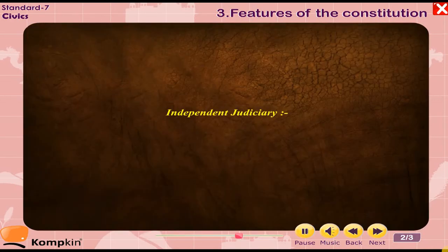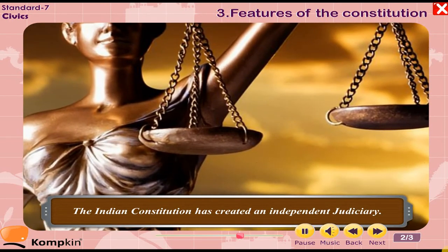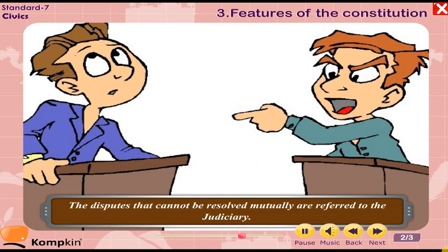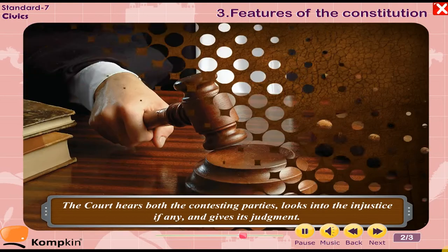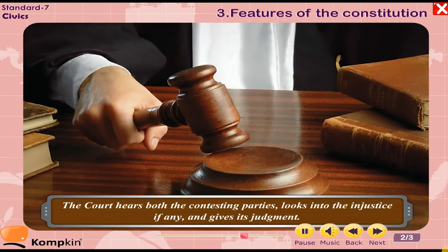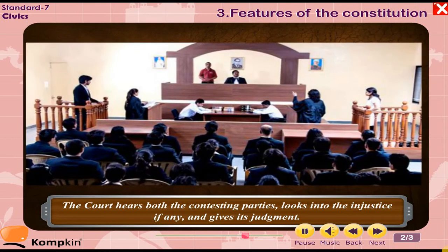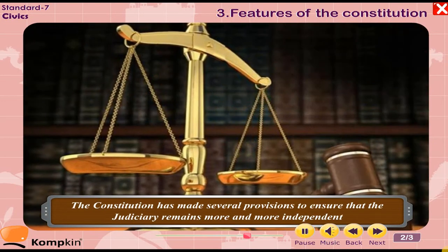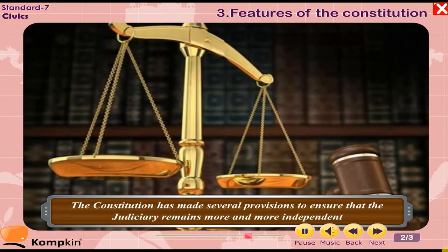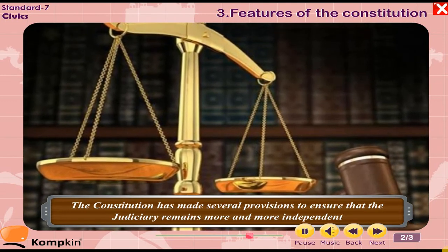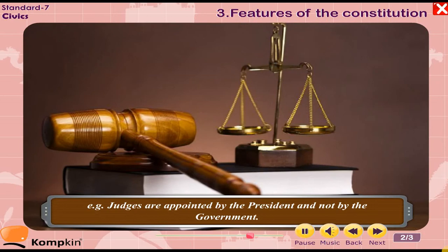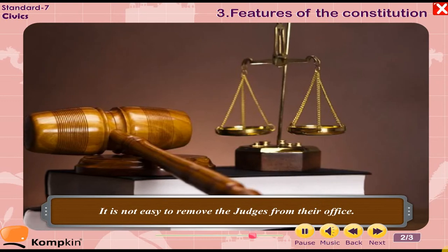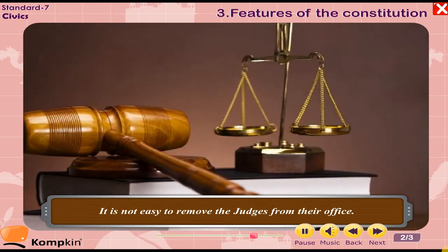Independent judiciary: The Indian constitution has created an independent judiciary. Disputes that cannot be resolved mutually are referred to the judiciary. The court hears both the contesting parties, looks into the injustice if any, and gives its judgment impartially. The constitution has made several provisions to ensure that the judiciary remains independent — for example, judges are appointed by the president and not by the government, and it is not easy to remove judges from their office.